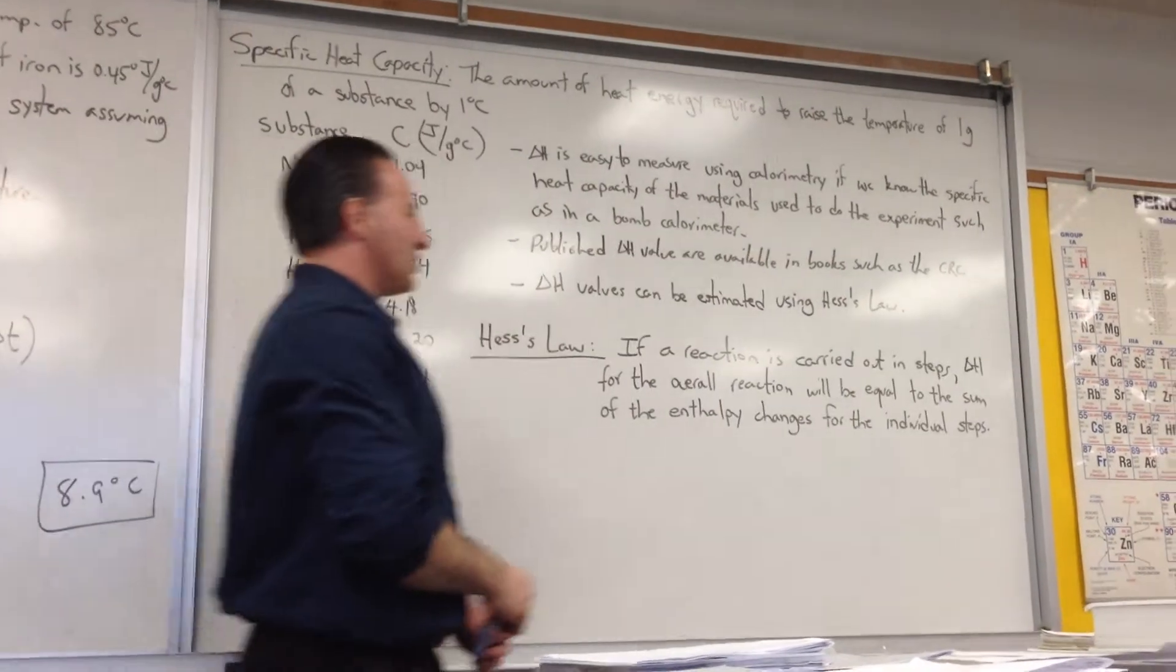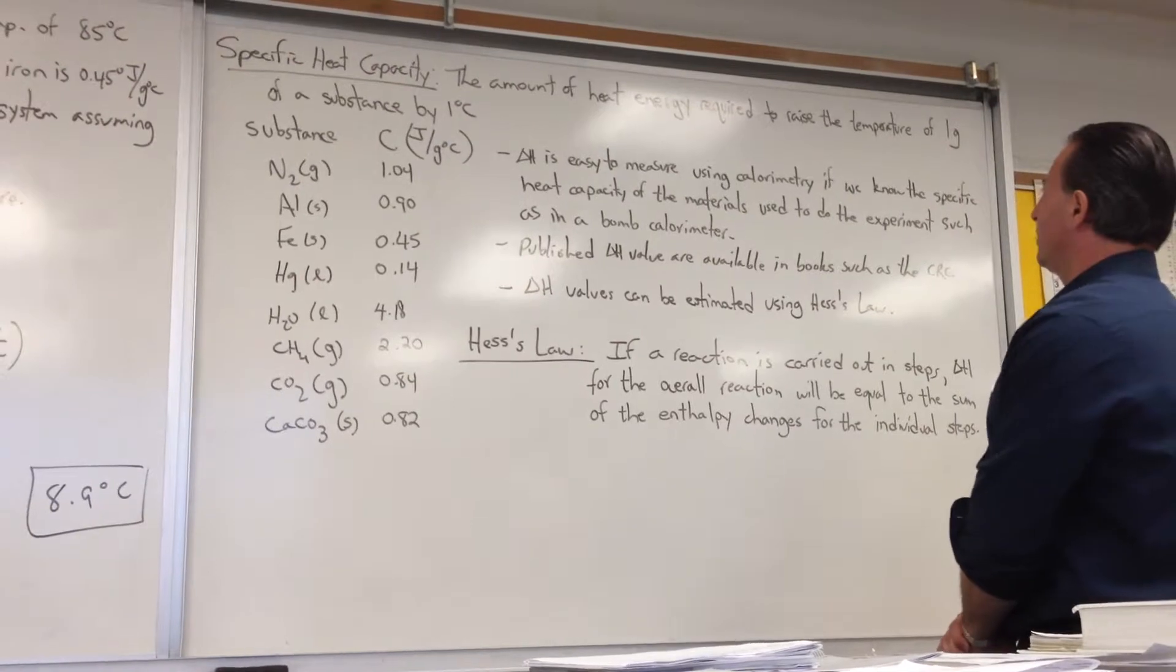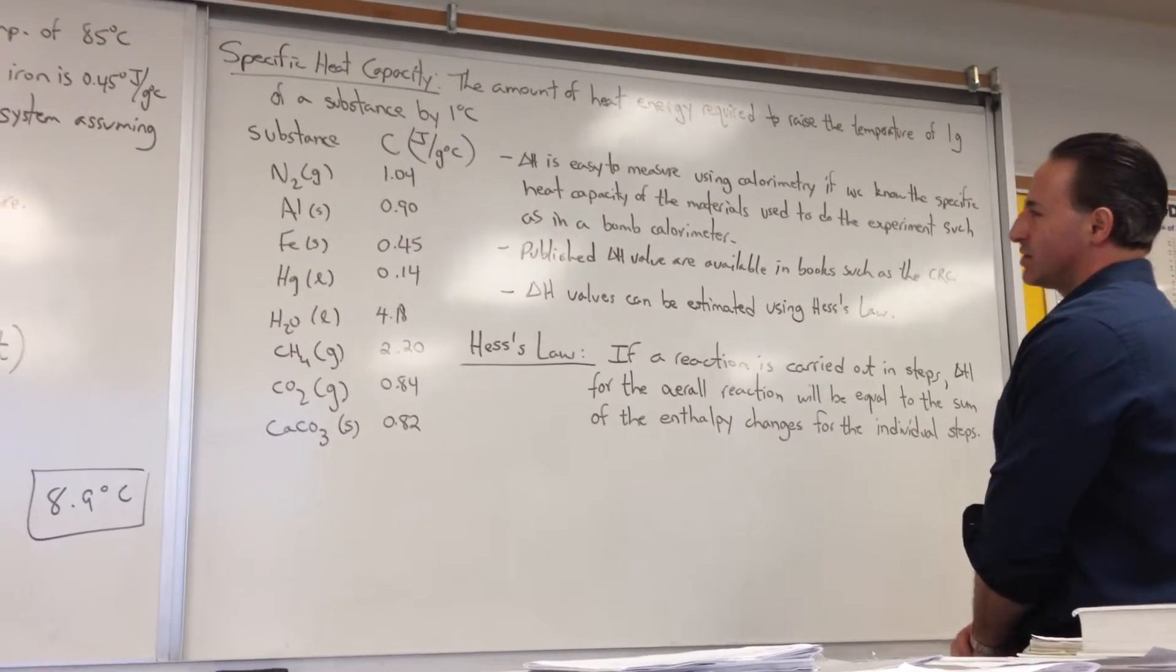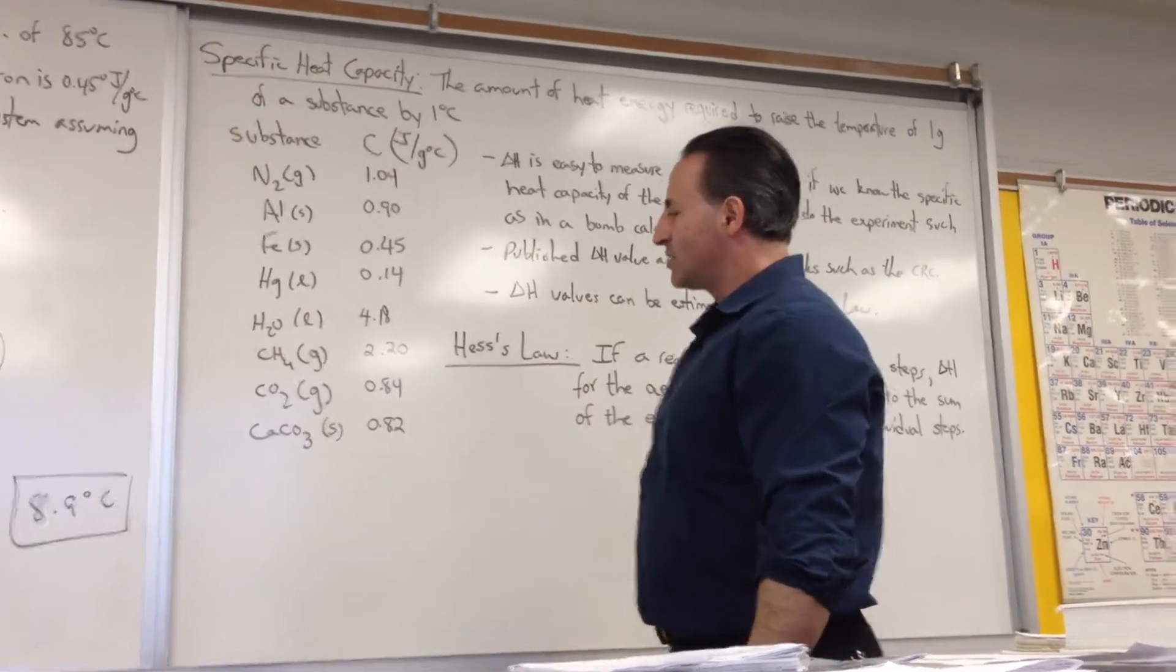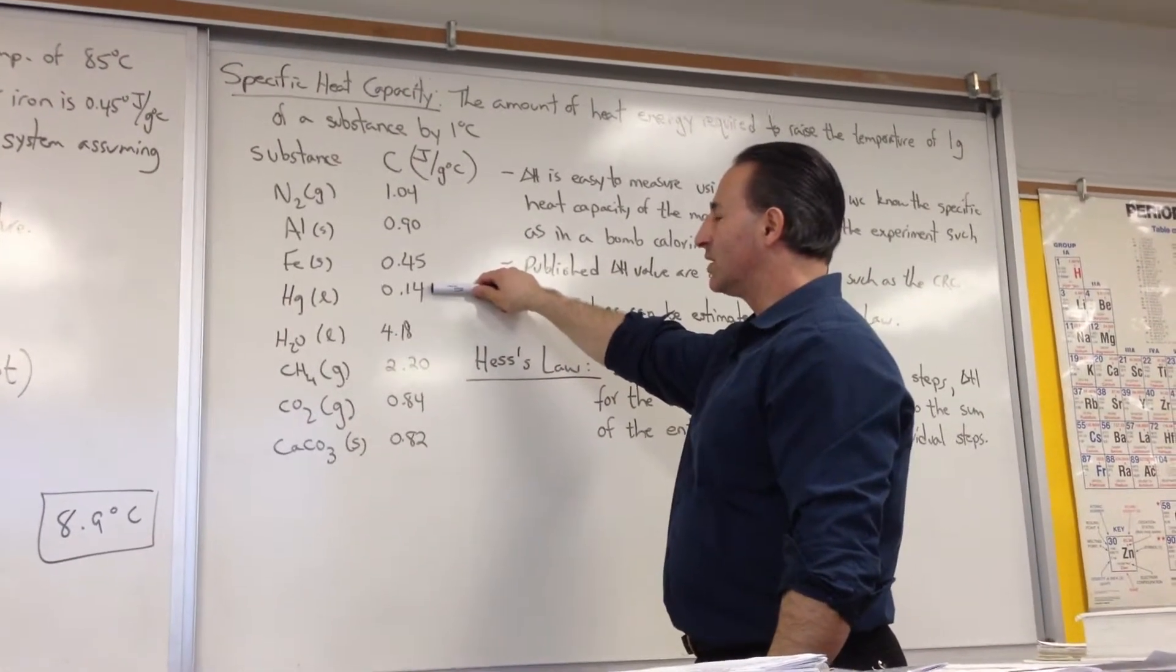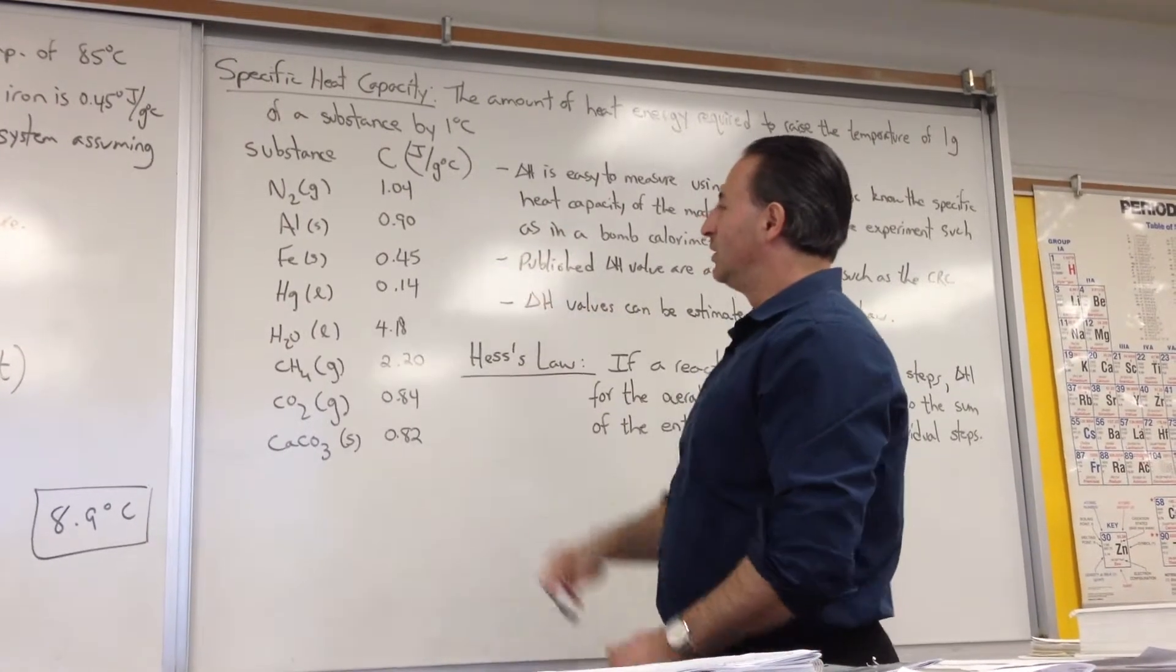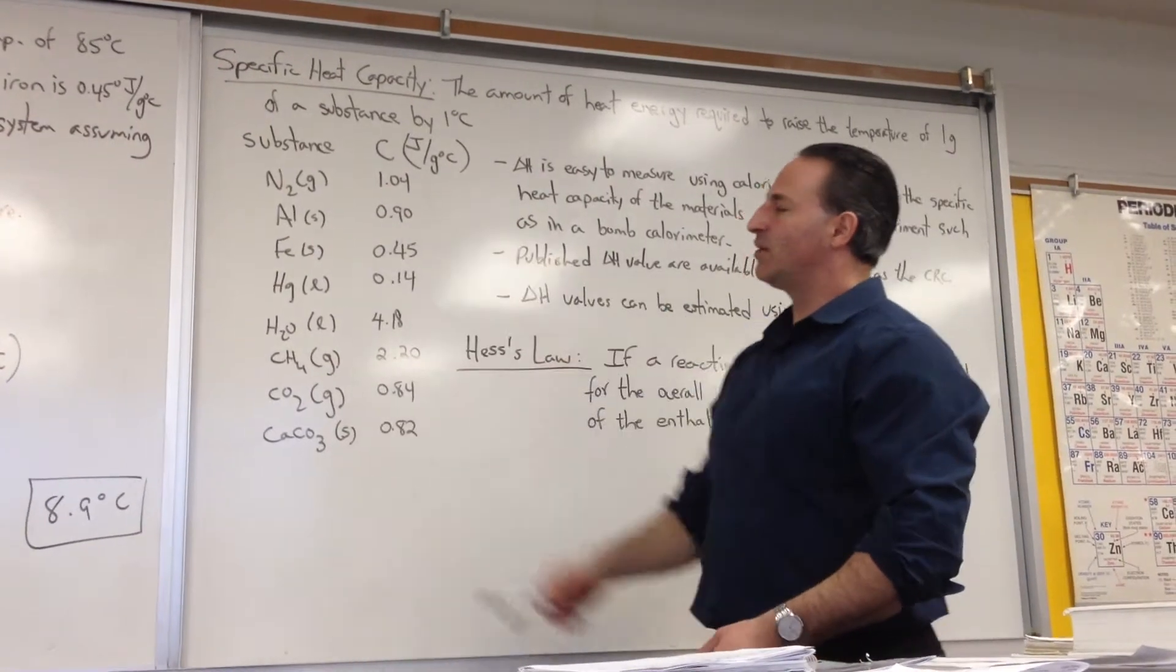So, just to further define specific heat capacity, it's the amount of heat energy required to raise the temperature of 1 gram of a substance by 1 degree Celsius. And here I've listed the heat capacities of several substances. We see that water really is the highest one. Mercury has a surprisingly low heat capacity, but it's also a very dense metal.